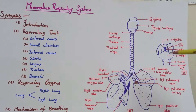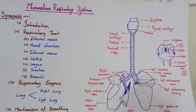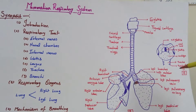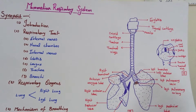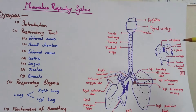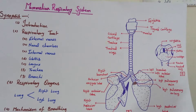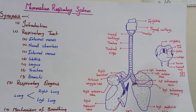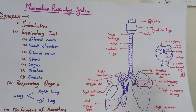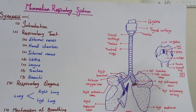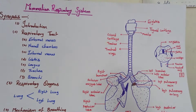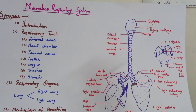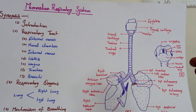The internal lining of the nasal chamber is vascular mucus olfactory epithelium. Vascular means it is related to blood vessels, mucus means it is slippery, olfactory means it is related to the sense of smell, and epithelium is just a group of tissues and cells. So vascular mucus olfactory epithelium is a layer of cells and tissues responsible for the sense of smell.